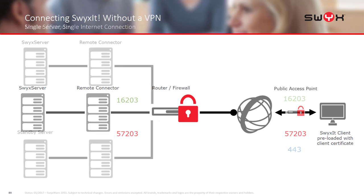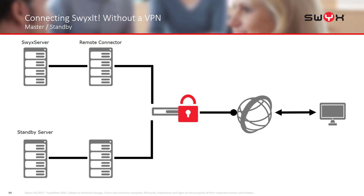Now let's look at the master and standby scenario with a single internet connection. In this case we can make use of the separate ports. Port 16203 is the first attempt, so port forward that to the Remote Connector service running on the SWIX master server. If that fails the request comes in on 57203, so you forward that to the standby server, making use of that drop-back facility.